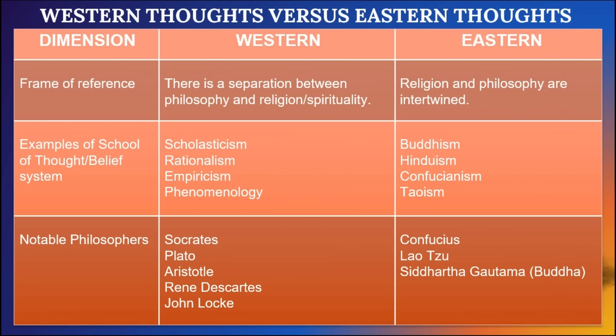Now we will compare western and eastern thoughts. In terms of frame of reference: western thought maintains a separation between philosophy and religion or spirituality, while in eastern thought, religion and philosophy are intertwined and inseparable. The western schools of thought include scholasticism, rationalism, empiricism, and phenomenology — more scientific approaches.